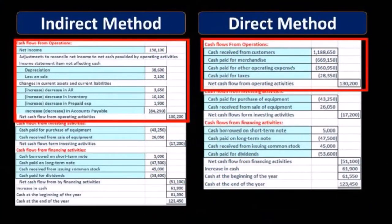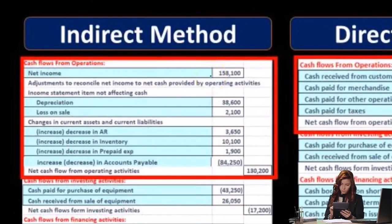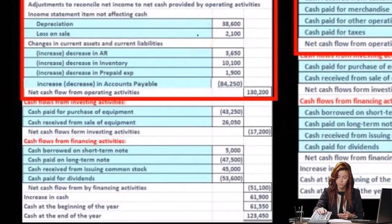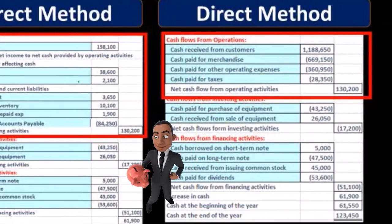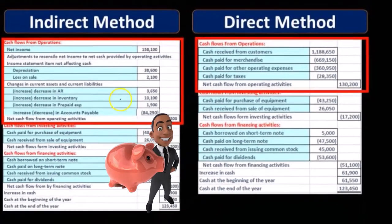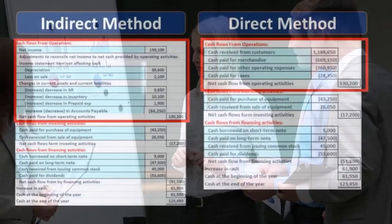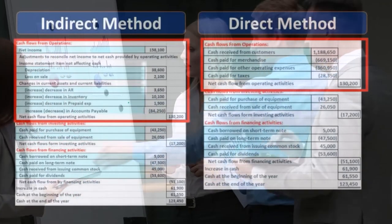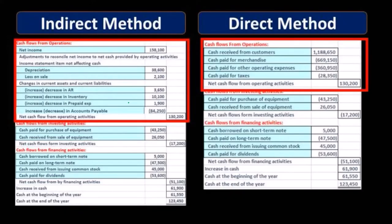In the indirect method, we start with net income — the bottom line on the income statement — and then reverse out things that are not cash related. For example, depreciation and gains or losses are not cash related. We also have differences from accounts receivable, inventory, and prepaid expenses. We'll talk more about why these are not cash related — we need to think about how these accounts go up or down and then reverse those out.